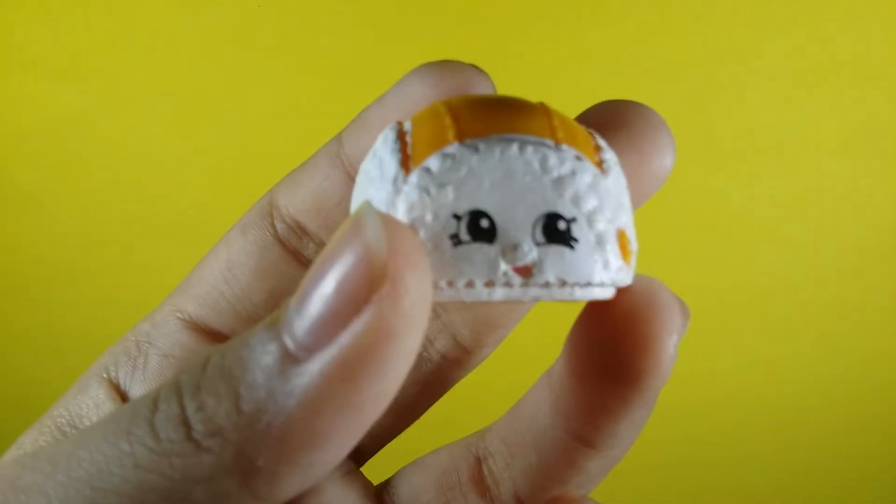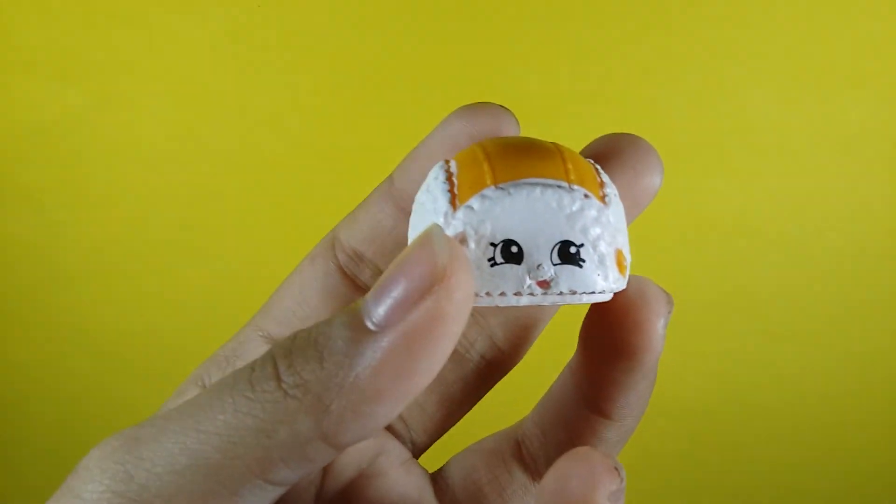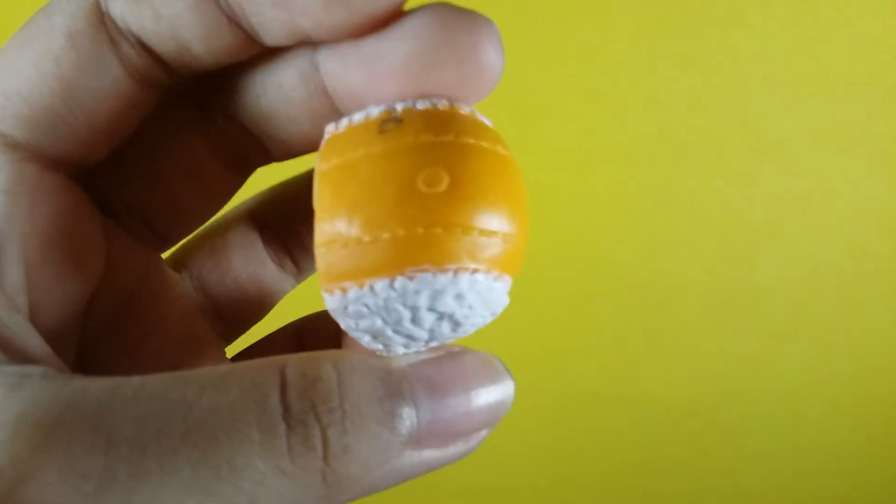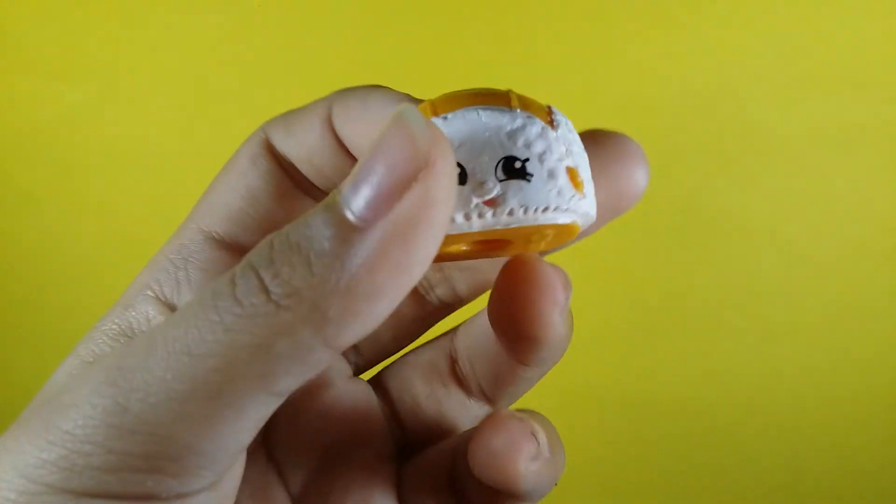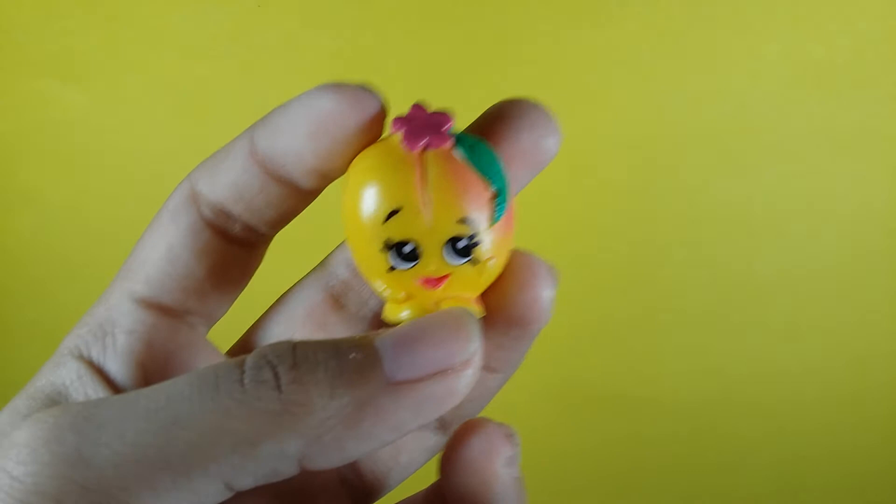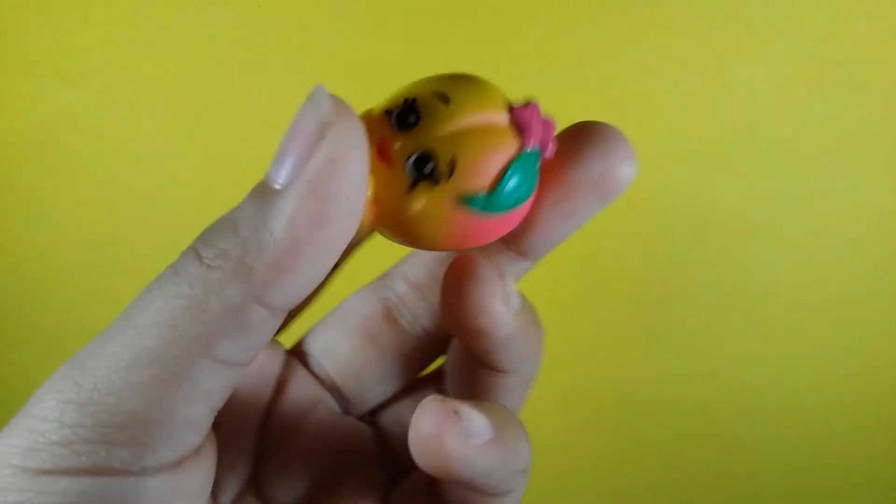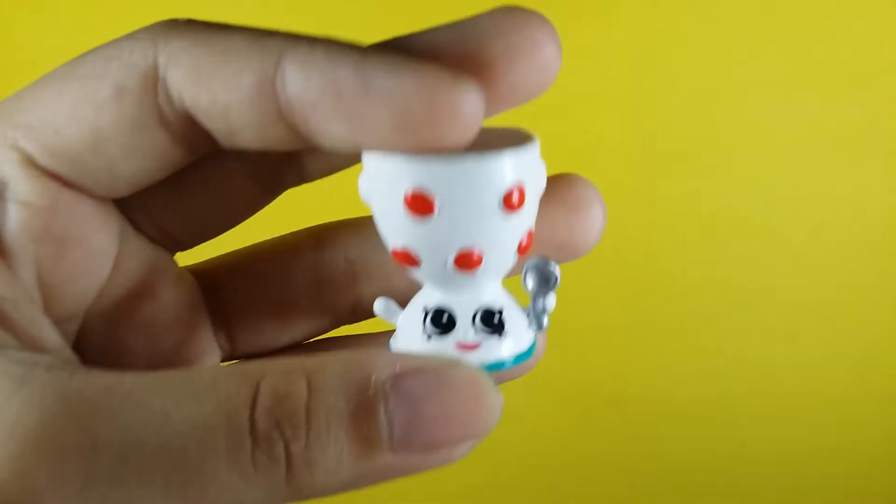First I'm going to show you Flappy Cap. It is a cap and it is orange and white. Next is Peachy. She's kind of blue and she's orange. Next is Edgar Egg Cup. It is an egg cup you can put an egg in.